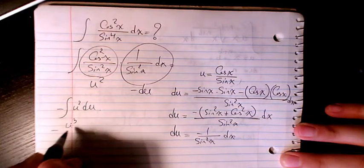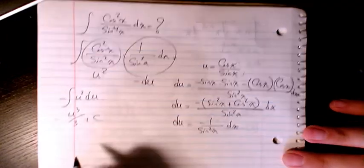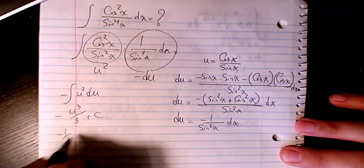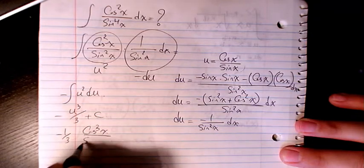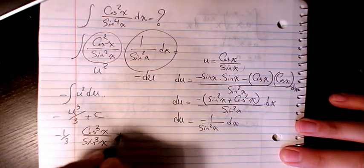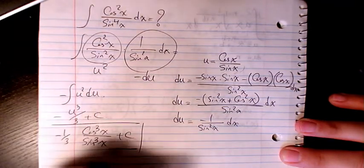Then it will be negative u cubed divided by 3 plus c. So it is negative one over three u to the power of 3, which is cosine cube x divided by sine cube x plus c. So that's the final answer.